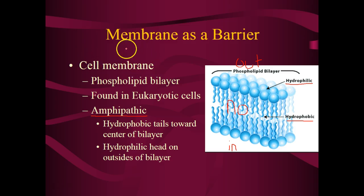Cell membranes are found in eukaryotic and prokaryotic cells, but we're going to talk in terms of eukaryotic cells for the rest of this chapter. Remember, prokaryotes have a cell membrane but they typically always have a cell wall on the outside. They can be gram-negative and gram-positive, which reflects a difference in how that cell wall is structured. The polysaccharide component of that cell membrane is peptidoglycan. The phospholipid found in eukaryotic cells is structured with heads on the outside and inside, and tails between those heads.